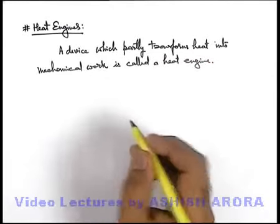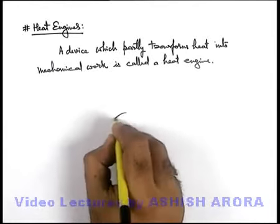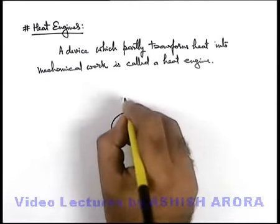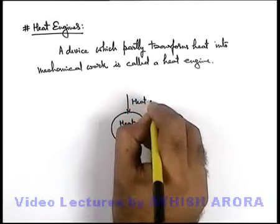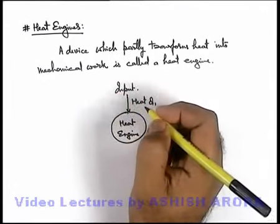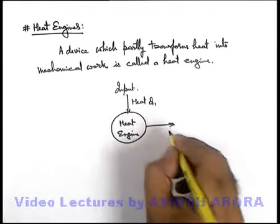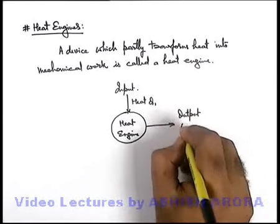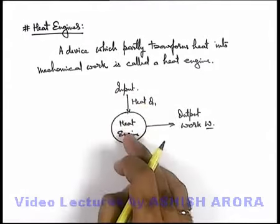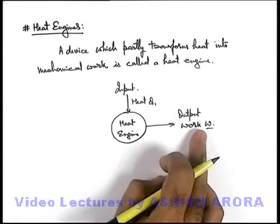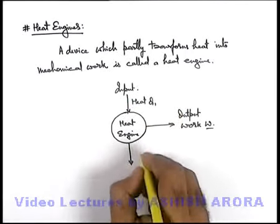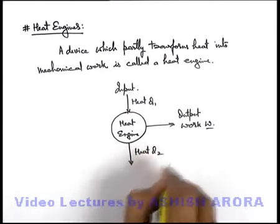The basic block diagram of a heat engine can be drawn like this. If we consider this as a heat engine system, it takes heat from an external system, which is called input heat Q1, where we are supplying heat to the heat engine. It does some amount of output work W on the surrounding. In the process, the heat engine always rejects some amount of heat, which can be written as Q2 — this is called rejection.